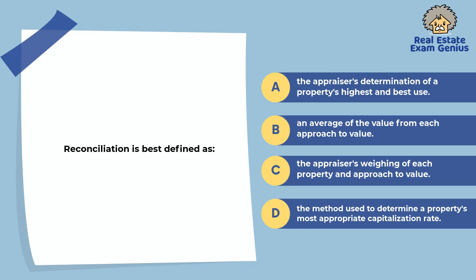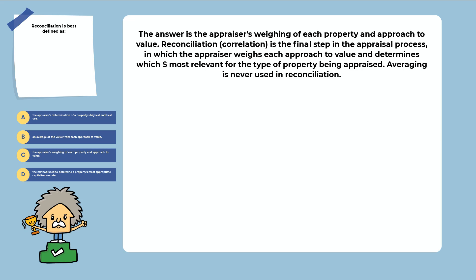Reconciliation is best defined as: the appraiser's determination of a property's highest and best use, an average of the value from each approach to value, the appraiser's weighing of each approach to value, or the method used to determine a property's most appropriate capitalization rate. The answer is the appraiser's weighing of each approach to value. Reconciliation is the final step in the appraisal process, in which the appraiser weighs each approach and determines which is most relevant for the type of property being appraised. Averaging is never used in reconciliation.